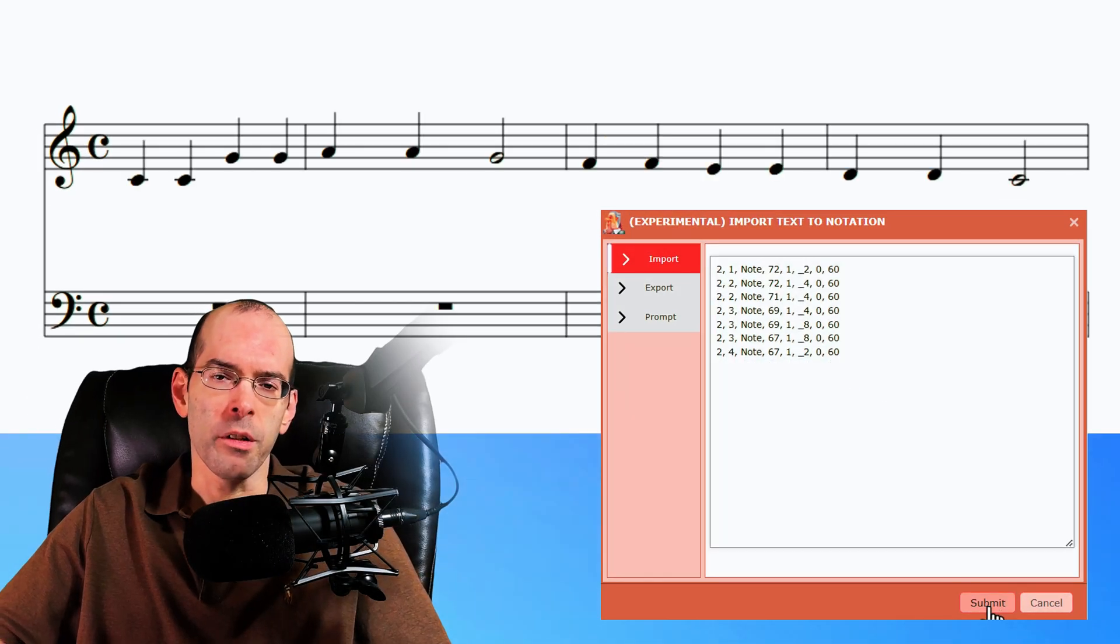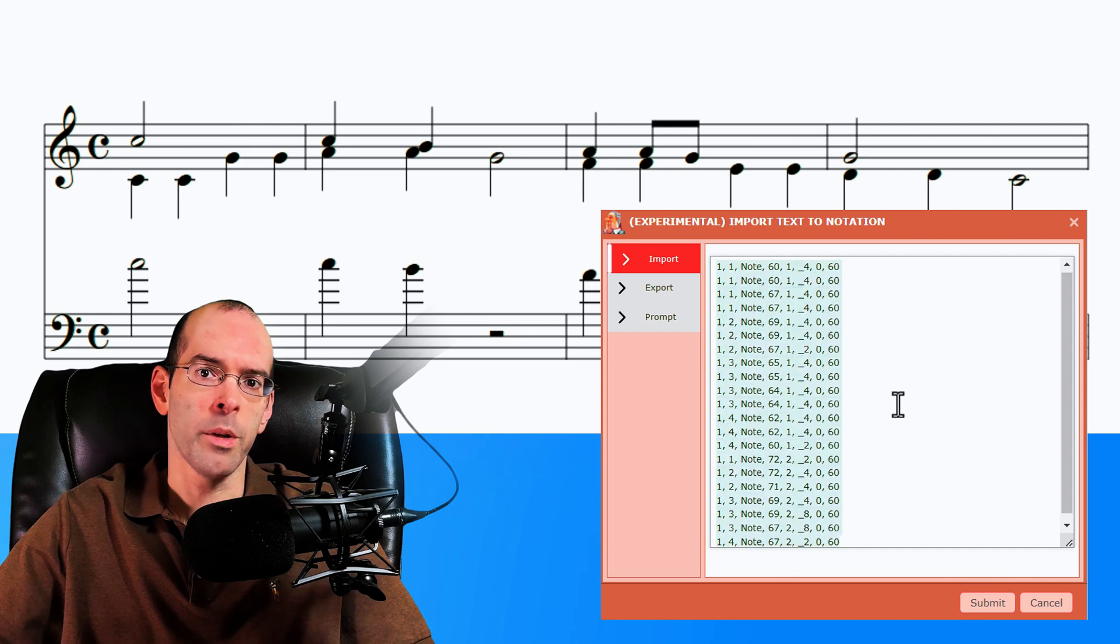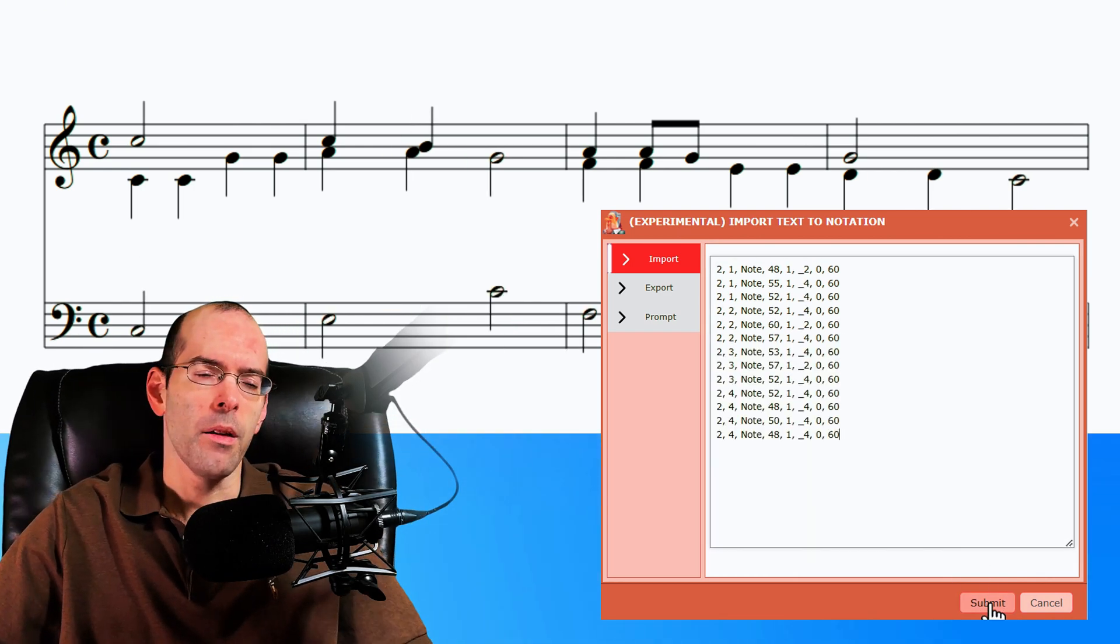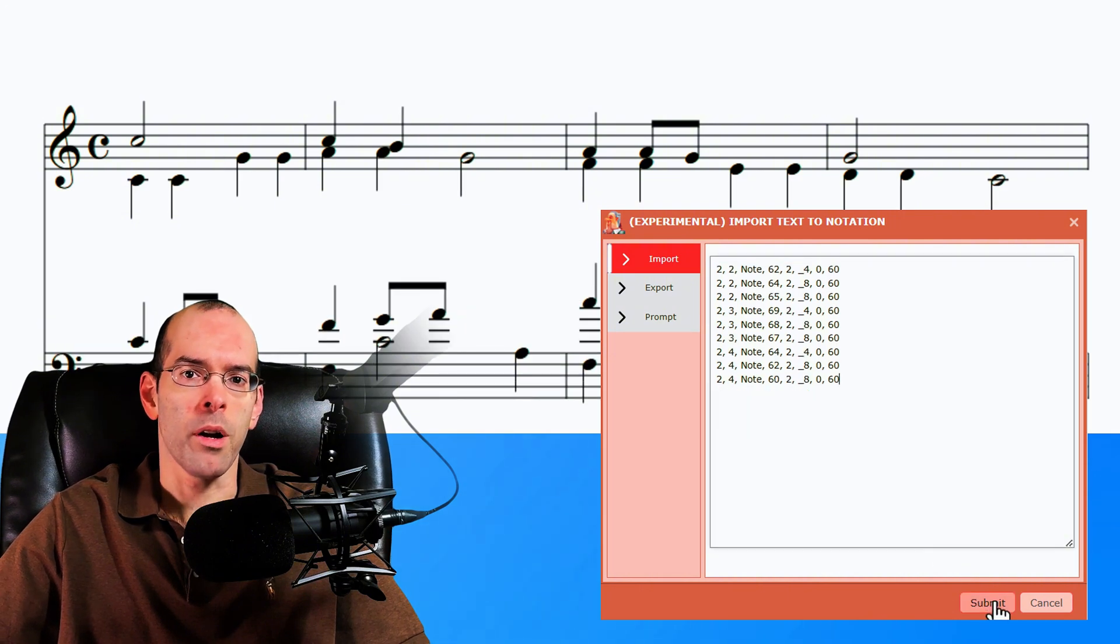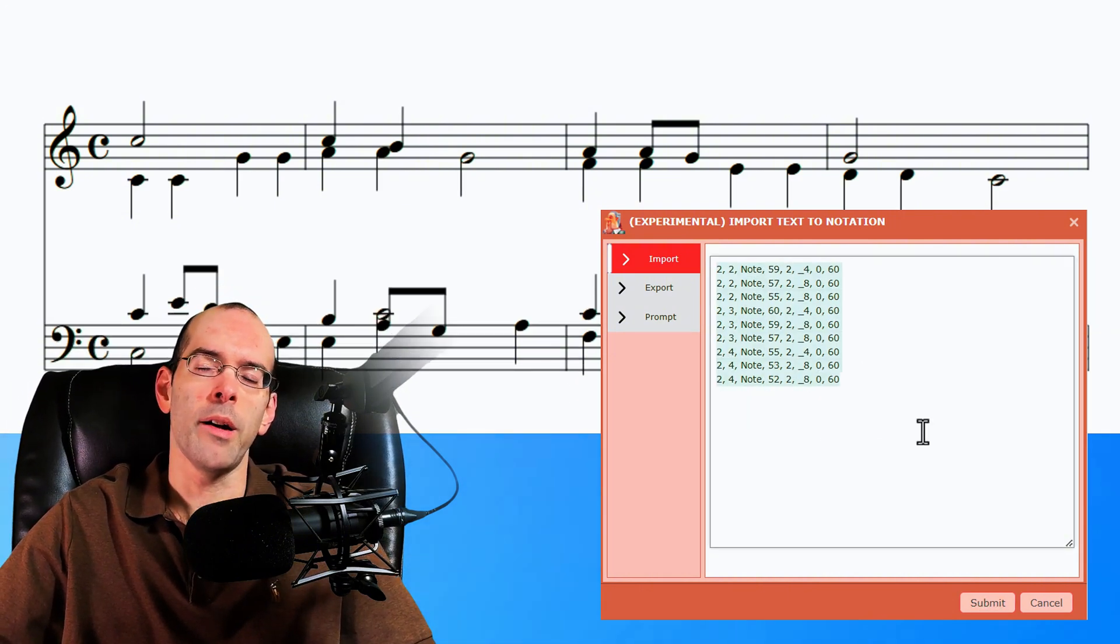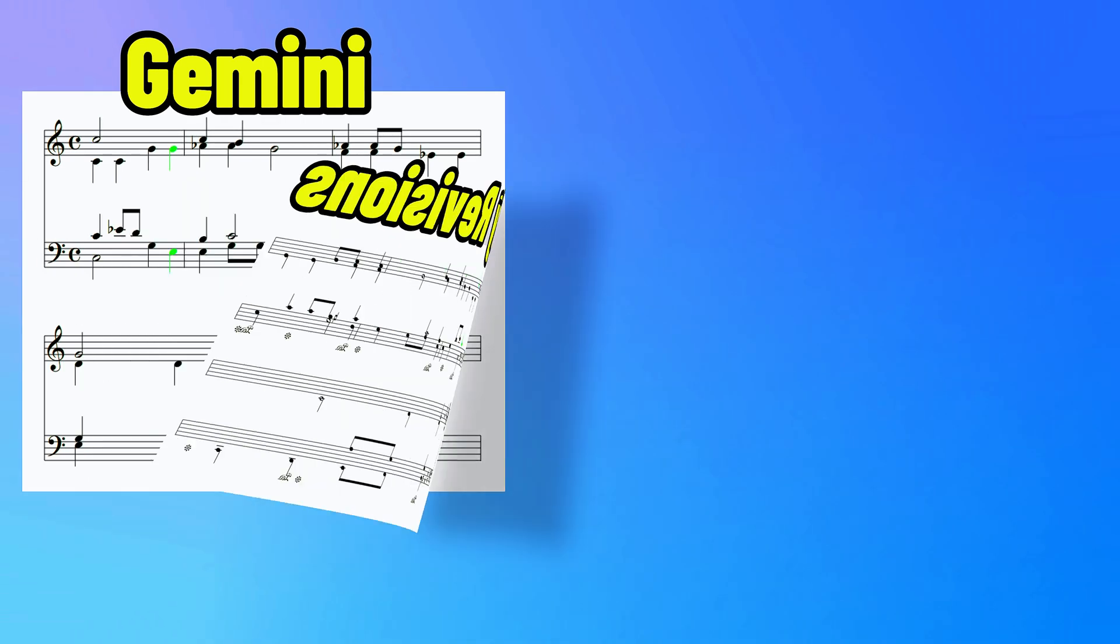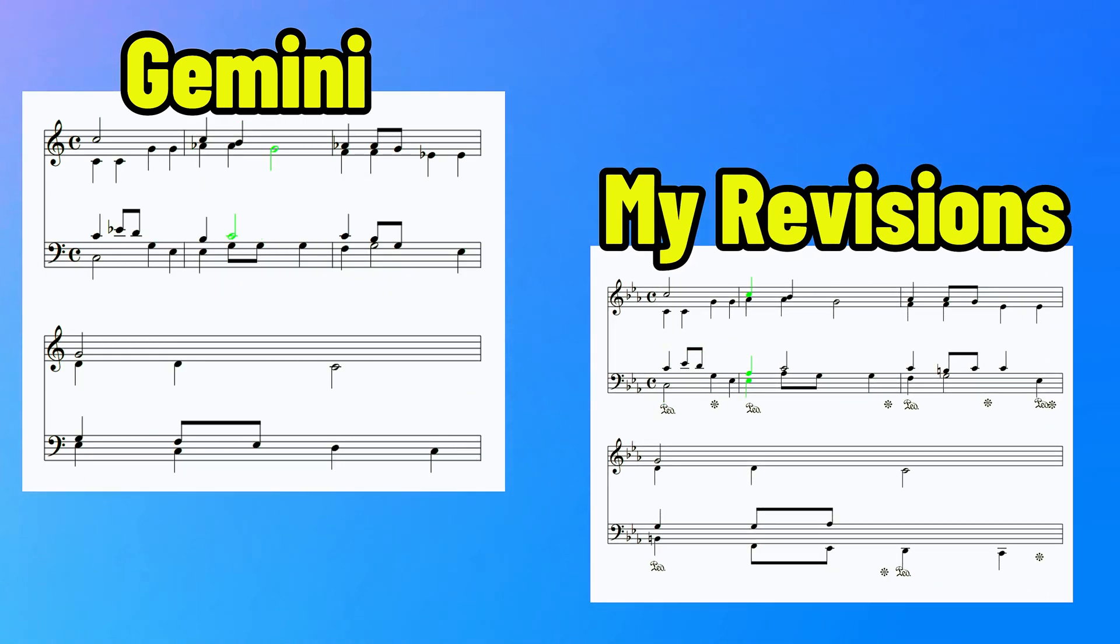And for the second demonstration, I'm going to push Gemini to compose Twinkle Twinkle Little Star, all from scratch. Then, through a series of prompts, have it compose in C minor using four voices. While I do intervene at the very end to make very minor changes, the results are almost unbelievable.